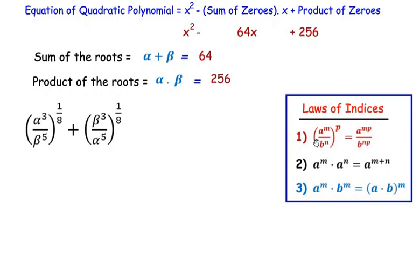The first law of indices states: (a^m / b^n)^p — here a and b are the bases and m, n, p are the powers. The outer power gets multiplied with the inner powers of the bases, giving us a^(m×p) / b^(n×p). In our expression, a represents alpha, b represents beta, m is 3, n is 5, and p is 1/8.